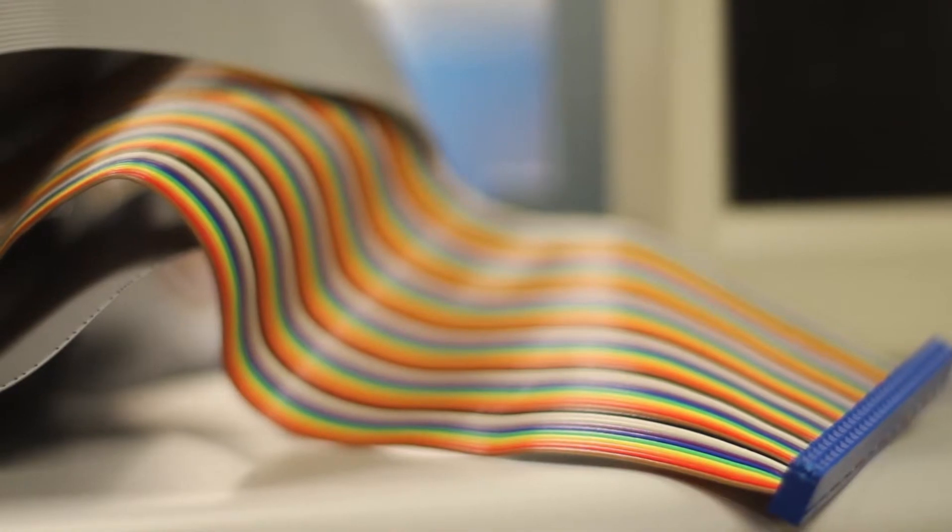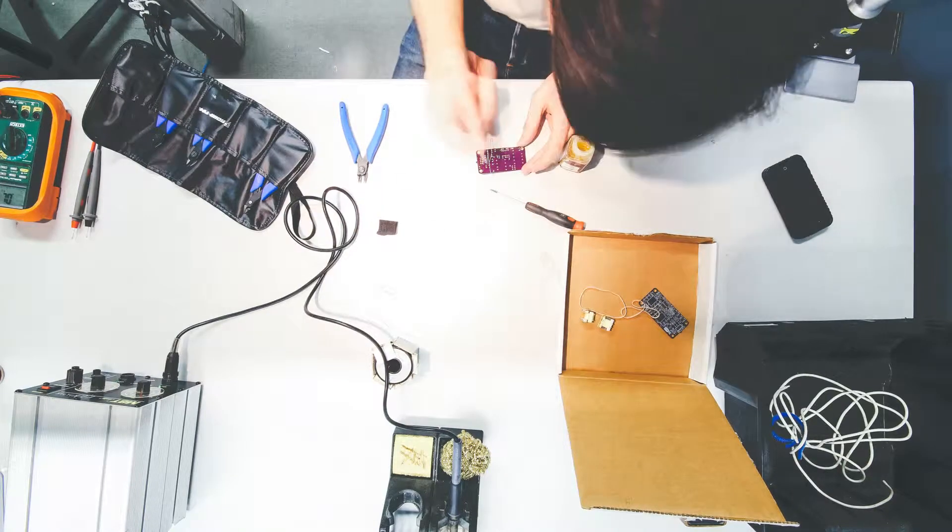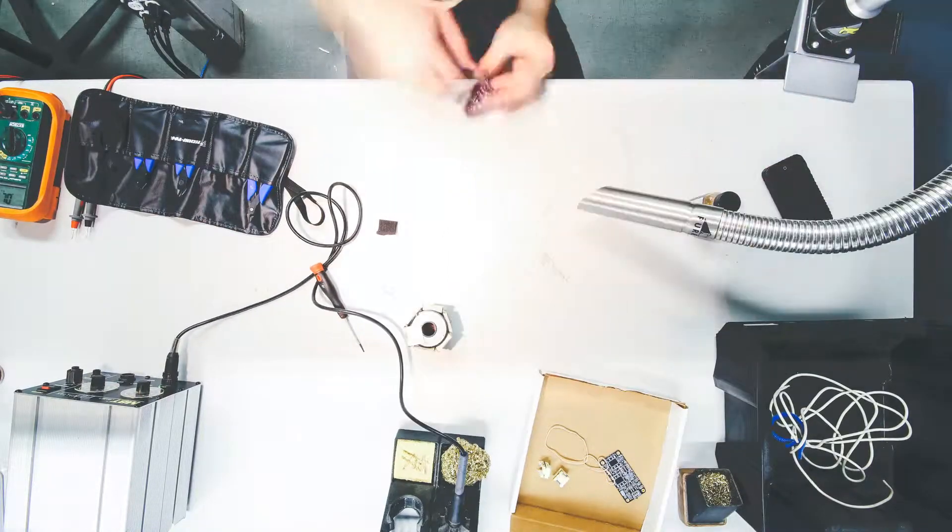So the product we're working on today is called Color, and it's an open-source modular harmonics generator. That sounds really wonky, but basically the idea is—my wife puts it really well—it's like Instagram filters for audio.